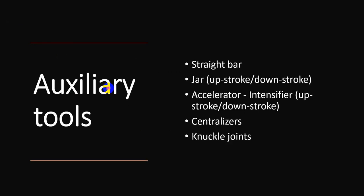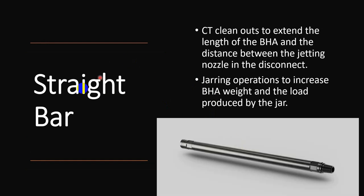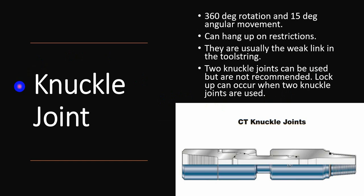Auxiliary tools include strip bars, jars, accelerators, neutralizers, and knuckle joints. A strip bar extends the length between the jetting nozzle and the hydraulic disconnect to prevent settling of proppant or scale inside the hydraulic disconnect so it remains functional. Jars are used to increase the BHA load produced. The knuckle joint allows 360-degree rotation with 15 degrees of angular movement; however, knuckle joints have disadvantages: they can hang on restrictions, they are usually the weak link in the string, and if you have two knuckle joints in a long BHA, lockup can occur, so they are not recommended.